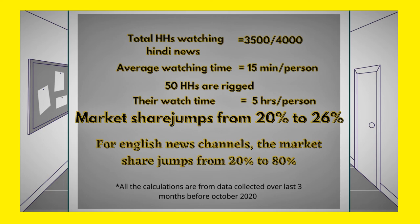Here are the calculations. At most, 3,500 to 4,000 meters are active per day for one major Hindi news channel. On average, one viewer watches Hindi news for 15 minutes a day. Now consider that 50 of those households are rigged and made to watch a specific Hindi news channel for 5 hours a day per person. Even if all the remaining 3,950 households watch the same channel for the average 15 minutes, the rigged channel will have a higher rating. By rigging just 50 households, the channel's market share will jump from 20% to 26%. If those same 50 rigged households are made to watch an English news channel for the same time, the channel's market share will jump from 20% to 80%.